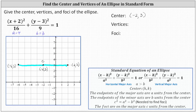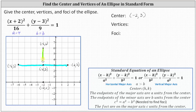Now we use b to find the endpoints of the minor axis. The minor axis is a vertical axis, and therefore we add and subtract b to the y-coordinate of the center to find the endpoints. Adding three to the y-coordinate: three plus three is six, so negative two comma six is one endpoint of the minor axis. Subtracting three from the y-coordinate: three minus three is zero, so negative two comma zero is the other endpoint of the minor axis. Notice the minor axis has a length of two b.